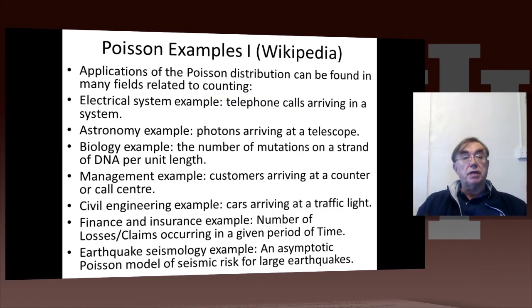Wikipedia in this article on the Poisson distribution gives lots of examples. There's obviously one example is cars arriving at parking lots, telephone calls arriving at an exchange, photons arriving at a telescope, and cars arriving at traffic lights.